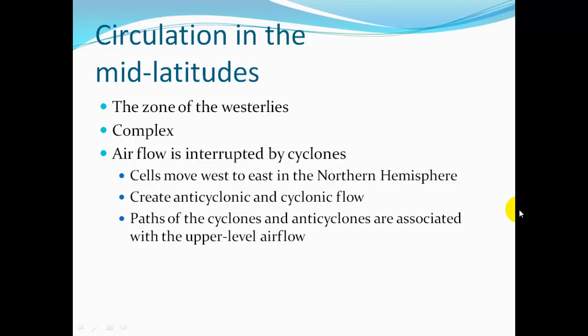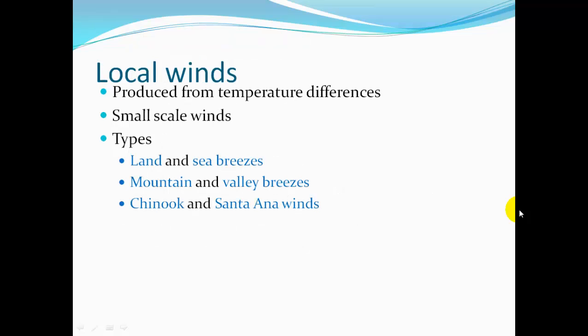In the mid-latitudes, a little bit north of Florida, there's a zone of westerlies with complex airflow interrupted by cyclones. The cells move west to east in the northern hemisphere and follow the jet stream, creating anticyclonic and cyclonic flow. The paths of cyclones and anticyclones are associated with upper-level airflow, and the jet stream is one controller of their pathways.